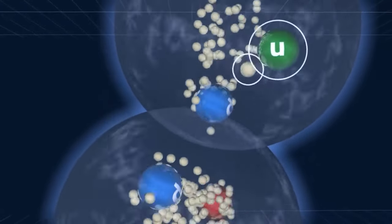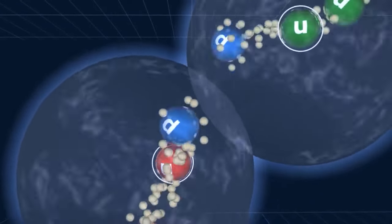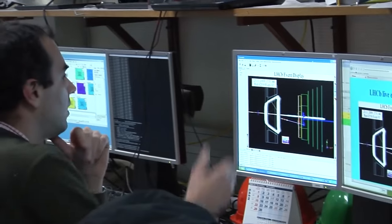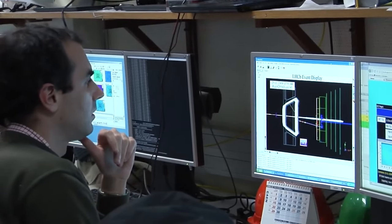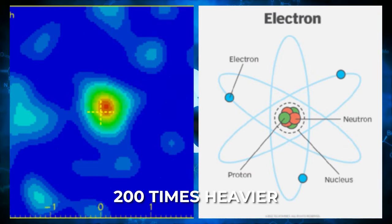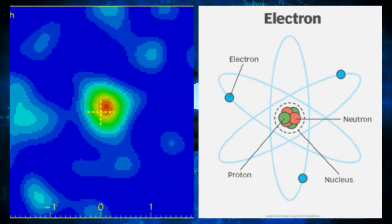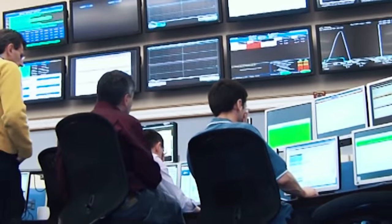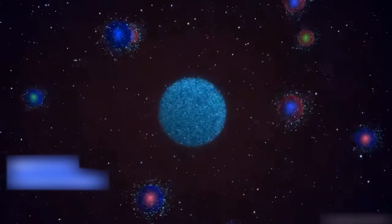What made this anomaly even more intriguing was the striking similarity between electrons and muons. Essentially, they are nearly identical, with the only difference being their mass. The muon is approximately 200 times heavier than the electron. Typically, such a difference in mass should not have a noticeable impact on the rate of transformations during the decay process.